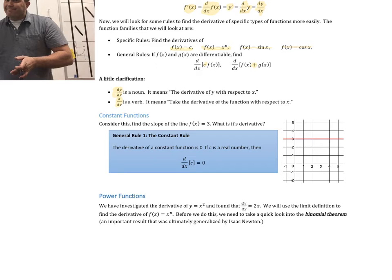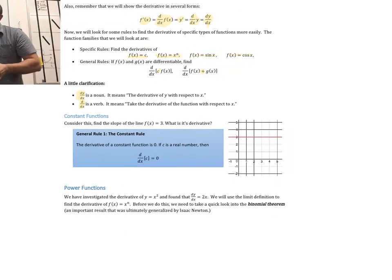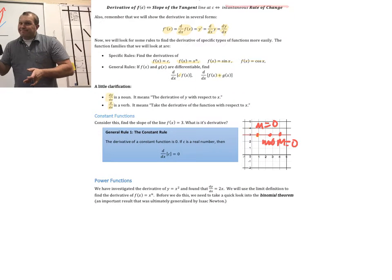The first rule: what if we have a constant like f(x) equals 3? Here's the graph of f(x) equals 3. If we pick any point, the slope of the tangent line at that point is 0. It doesn't matter where you go — the slope is always 0, and the slope is the derivative. So our rule is: when we take the derivative of a constant, we get 0.